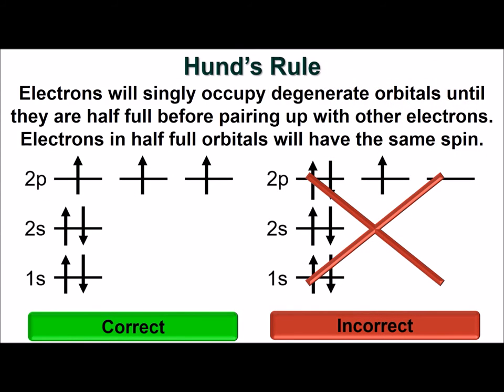We have just one more concept to discuss before we complete our picture of quantum numbers, and that is Hund's rule. Hund's rule states that electrons will singly occupy degenerate orbitals until they are all half-full, before pairing up with another electron. Electrons occupying half-full orbitals will all have the same spin.